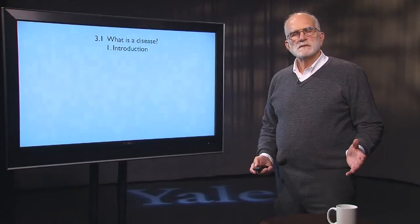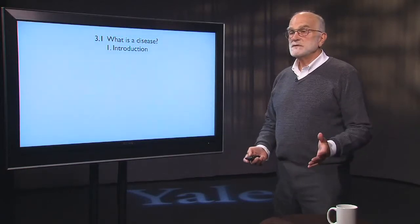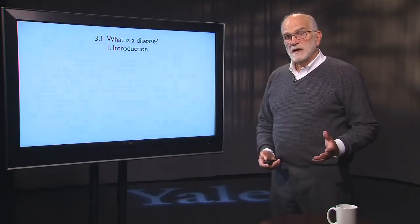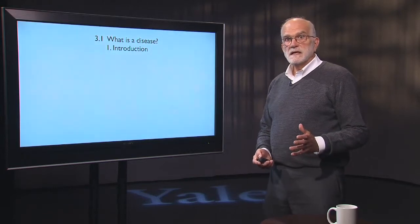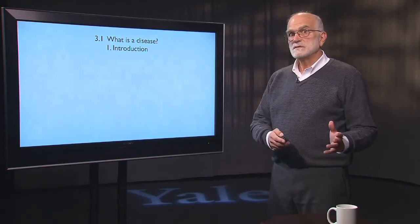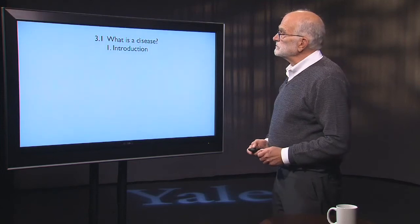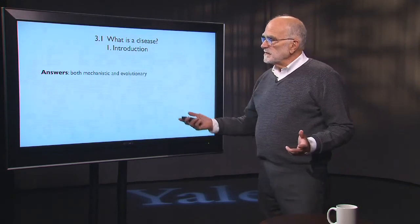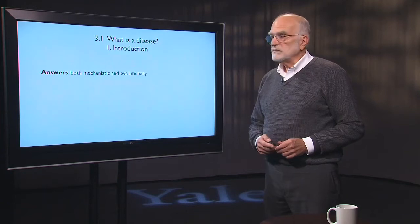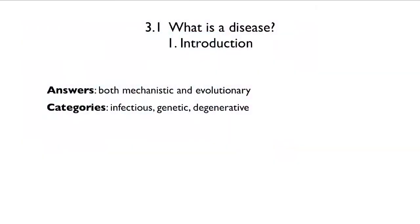We've taken quite a look at what is a patient, but on the other hand, what is a disease? It turns out that a disease is a rather nuanced sort of category. The answers to this question can be either mechanistic or evolutionary. The classical categories are infectious, genetic, and degenerative diseases, but we'll see that it's not that simple. The causation of disease varies from genetic to environmental — these are the issues we'll concentrate on in this introduction.